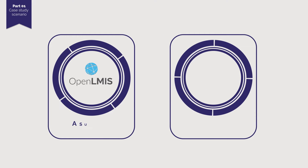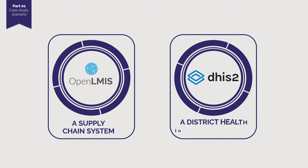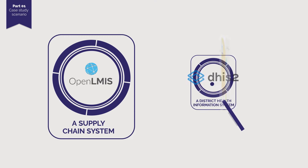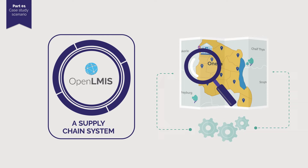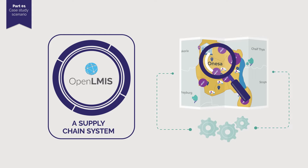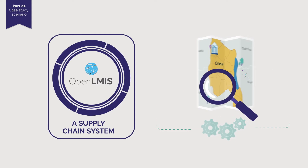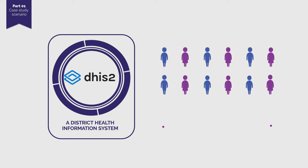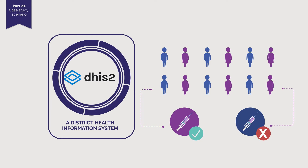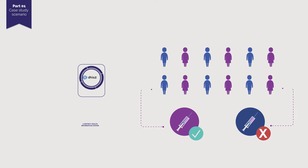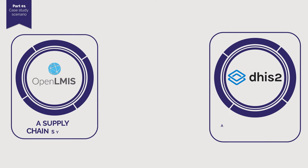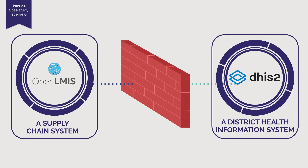OpenLMIS, a supply chain application, and DHIS2, a district health information application. OpenLMIS can give them a view of the vaccine supply chain — how many vaccines are available to be used and where they are stored. And DHIS2 can give them a view of the number of children in the district catchment area who are eligible for vaccines. But they can't see this information together because it is in two different applications.